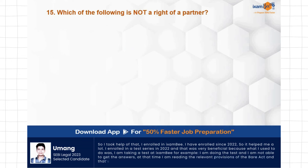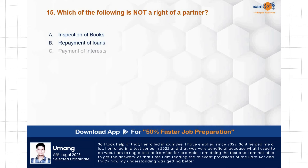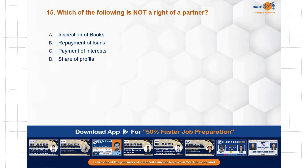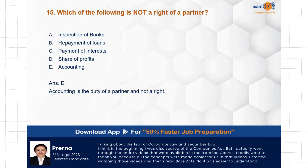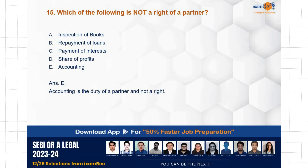Question: Which of the following is not a right of a partner? Options: inspection of books, repayment of loans, payment of interest, share of profits, accounting. The correct answer is E — accounting. Accounting is a duty of a partner, not a right; he has to maintain the accounts. This shows how questions are twisted — all options relate to things a partner can do, but the difference is between what he does as a matter of right versus as a matter of duty.